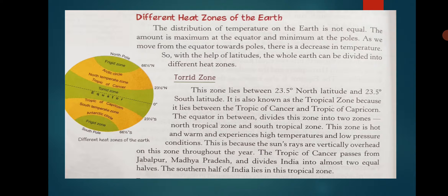The frigid zone means the cold region. The areas lying between the Arctic Circle and the North Pole in the northern hemisphere, and between the Antarctic Circle and the South Pole in the southern hemisphere, are the two frigid zones. The sun never rises above the horizon in these areas. The rays fall extremely slantingly and do not carry much heat, so these regions remain very cold throughout the year. The amount of heat reduces as we move towards the poles.